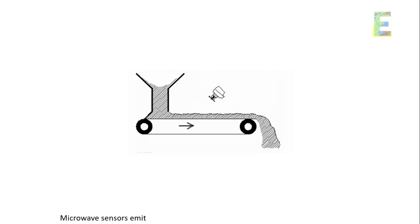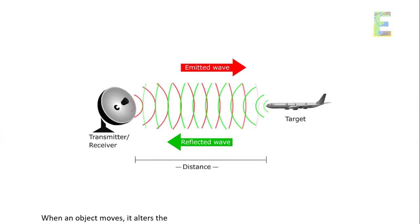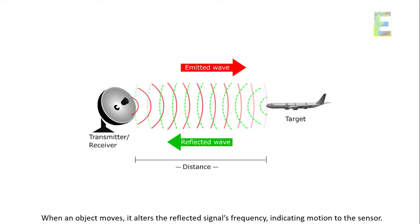Microwave sensors emit continuous microwave signals and measure the reflections. When an object moves, it alters the reflected signal's frequency, indicating motion to the sensor.